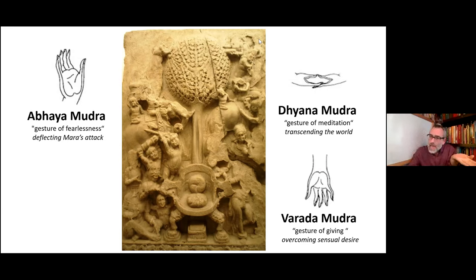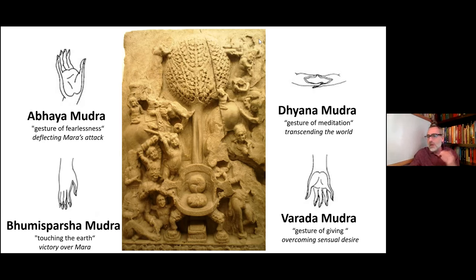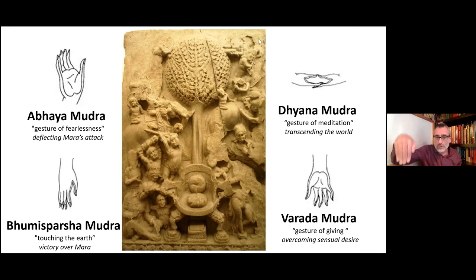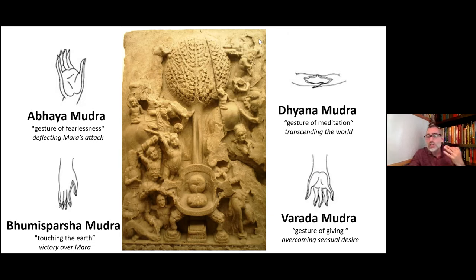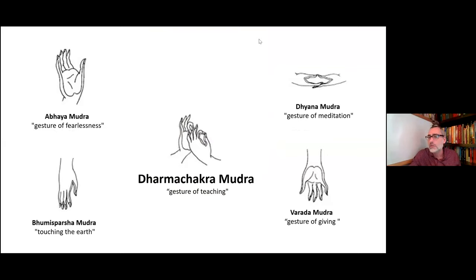Finally, upon attaining enlightenment and completely defeating Mara — attaining fearlessness and desirelessness — the Buddha made a final gesture of touching the earth: the bhumi sparsha mudra. This mudra of touching the earth represents victory over Mara. The knowledge the Buddha realized is represented by the tree of enlightenment looming over the whole scene. The fifth gesture I want to show is the dharma chakra mudra — the gesture of teaching — where both hands are joined near the heart or chest.